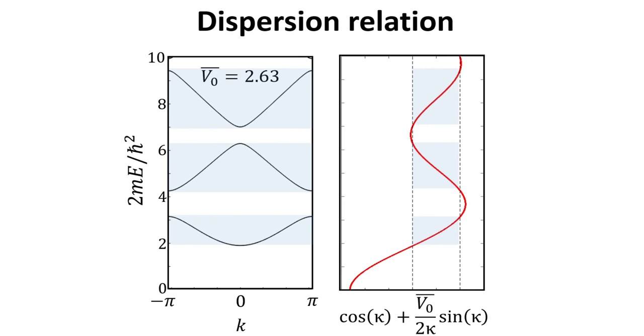Here is a plot of the dispersion relation obtained by solving the previous equation. For comparison purposes, we also added the plot of the previous slide. The distinct energy bands in the dispersion relation are the distinct eigenenergies of Bloch electrons we discussed in the previous video.